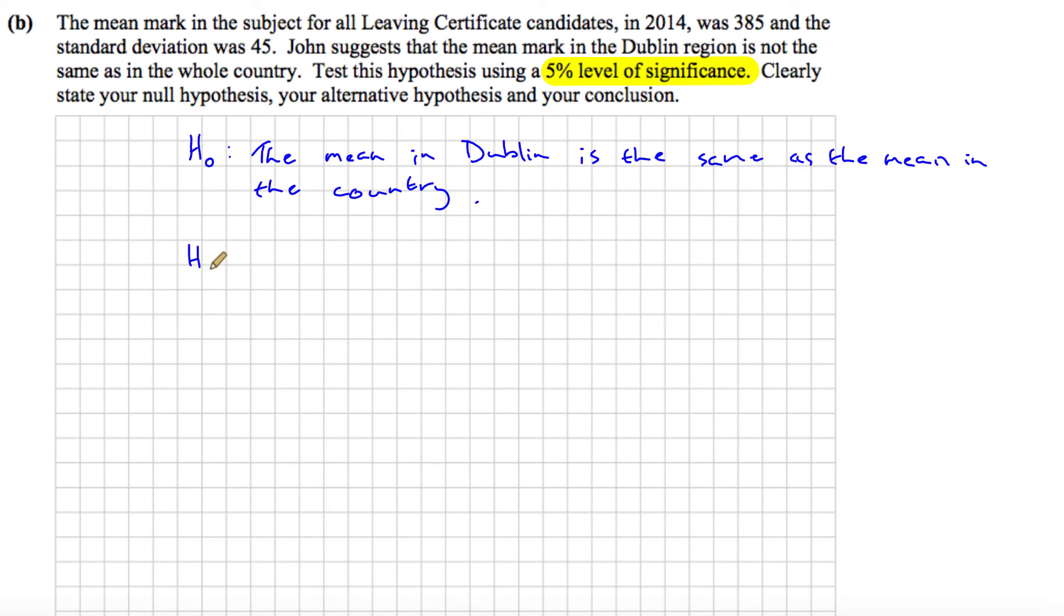And the alternative hypothesis then, which we show as H1, will be that the mean is different. So the mean in Dublin is different from the country. This is what John is suggesting. So that's our null hypothesis and our alternative hypothesis.